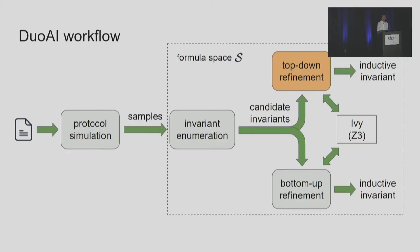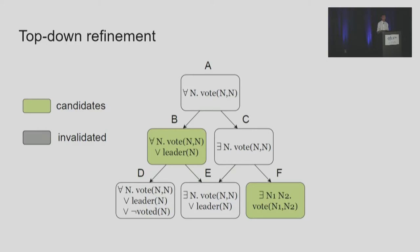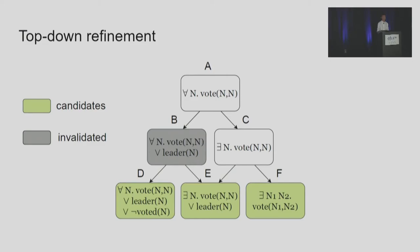For top-down refinement, after enumeration we feed the candidate invariants to Ivy, which calls the SMT solver to prove their correctness. Suppose Ivy says everything is inductive — we are done and the protocol is proved. But if Ivy says Formula B is not inductive, we need to weaken it. We know that invariant enumeration gives the strongest possible formulas, so when it fails it can only be too strong rather than too weak. We invalidate B and add its weaker forms, Formulas D and E, to the candidate set. In the next iteration, Ivy determines whether D and E are inductive, and we may continue weakening accordingly until we reach an inductive invariant.